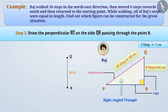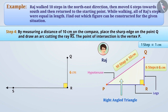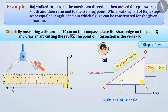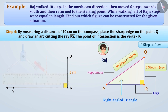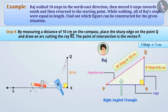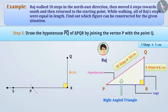Step 3: We will draw a perpendicular RS on side QR passing through point R. Vertex P must be located somewhere on this perpendicular. Step 4: To find the location of vertex P, we will take a measure of 10 cm on the compass and draw an arc by placing the sharp edge of the compass on point Q, cutting the ray RS. The point of intersection is the vertex P of triangle PQR. Step 5: Then, by joining vertex P to point Q, draw the hypotenuse PQ of triangle PQR. This will complete the construction of triangle PQR.